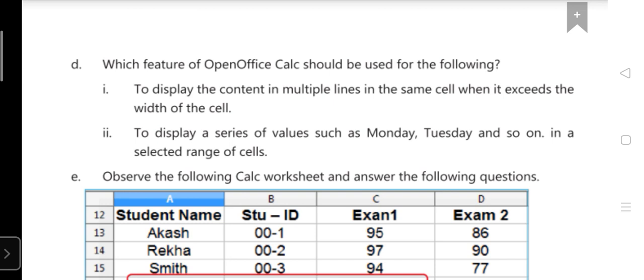Second: to display a series of values such as Monday, Tuesday and so on in the selected range of cell. Here the word is there: range of cell and we have to display the series of values. So answer is autofill. In D, first answer: wrap text. Second answer: autofill.